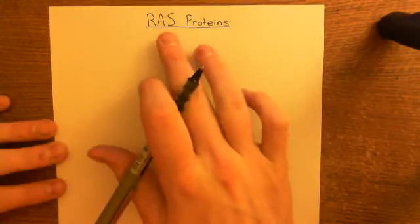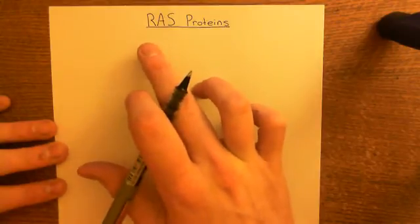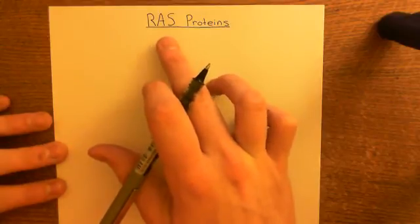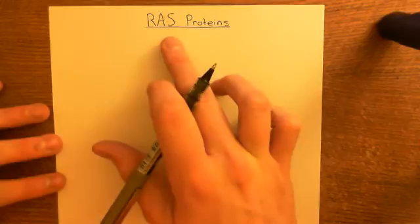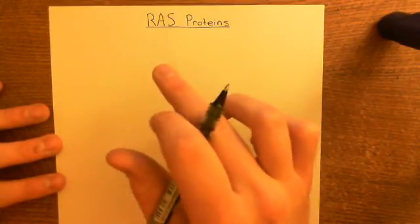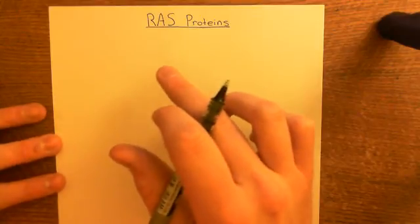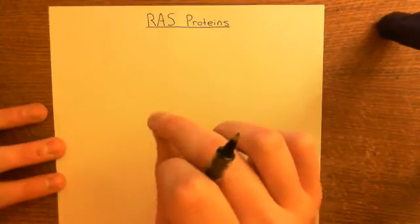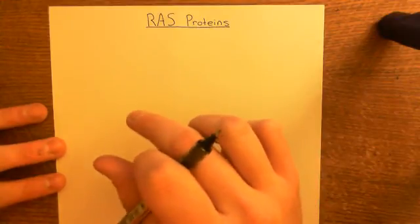The MAP kinase ERK pathway is the major signaling pathway that RAS proteins are involved in. So if we could stop them getting to the membrane, then maybe we could stop them from actually functioning in that pathway and thereby stop the overactivation of that pathway. It is the overactivation of that pathway that leads to overproliferation — it's one of the factors that leads to overproliferation in tumor cells.